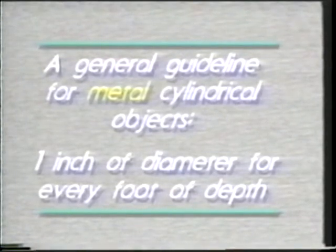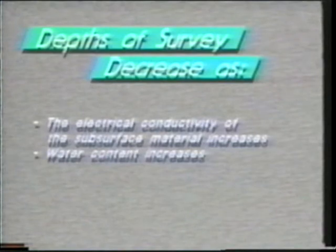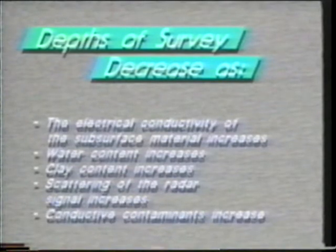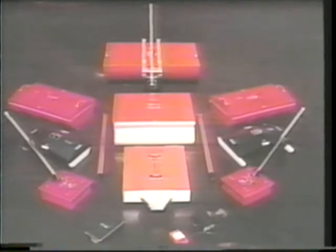Remember, this guideline is only for metal pipe. Other materials with different dielectric constants would have different requirements, and the surrounding subsurface materials will also affect your data. The possible depths of your survey will decrease as the electrical conductivity of the subsurface material increases, the water content increases, the clay content increases, scattering of the radar signal increases, and conductive contaminants increase. Once your target characteristics are identified, you can select an antenna. The two main factors are: what is the maximum target depth, and what is the size of the target. Selecting the proper size antenna is crucial to the success of the GPR survey.